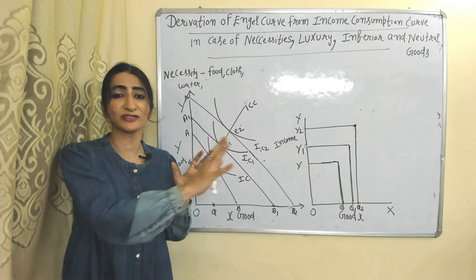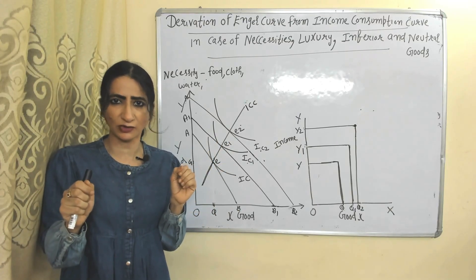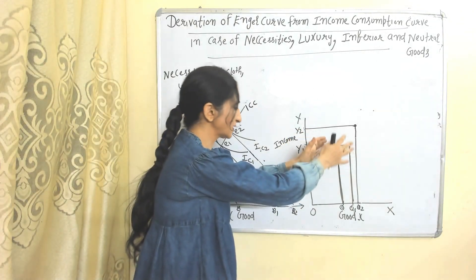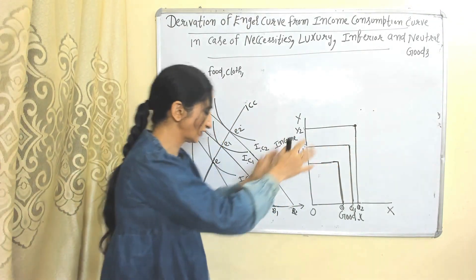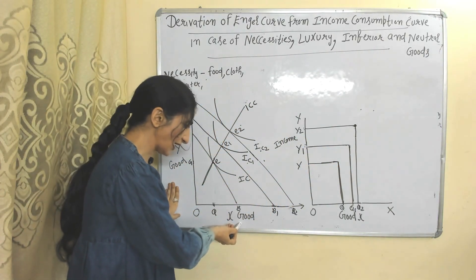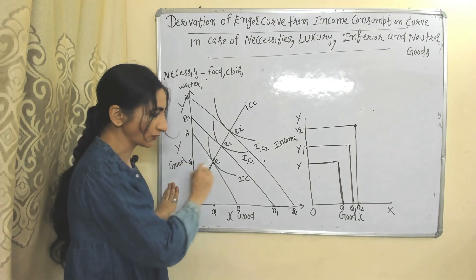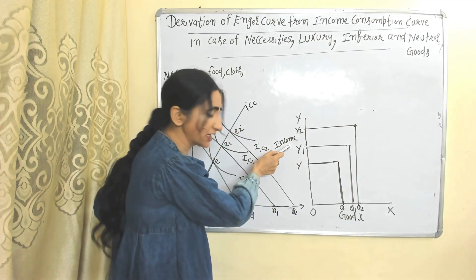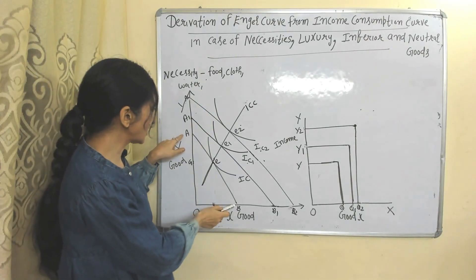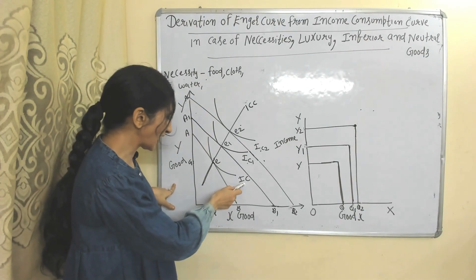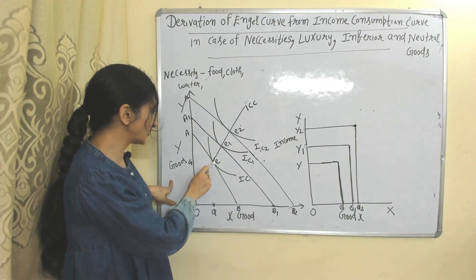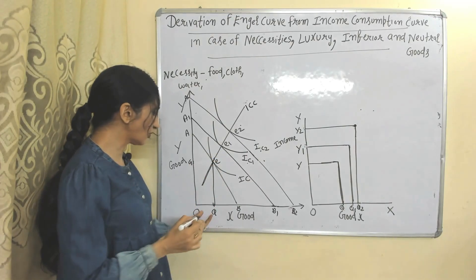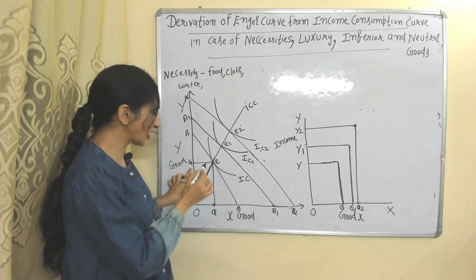First of all, we will see how to derive the Engel curve in case of necessity goods. Here we have the income consumption curve. With the help of the income consumption curve we will derive the Engel curve. On the x-axis we have X good, on the y-axis we have Y good. On the second graph, the x-axis has X good and the y-axis has income. We have initial budget line AB, initial indifference curve IC, and initial consumer equilibrium point E. Initially the consumer is buying OQ quantities of X and OG quantities of Y.